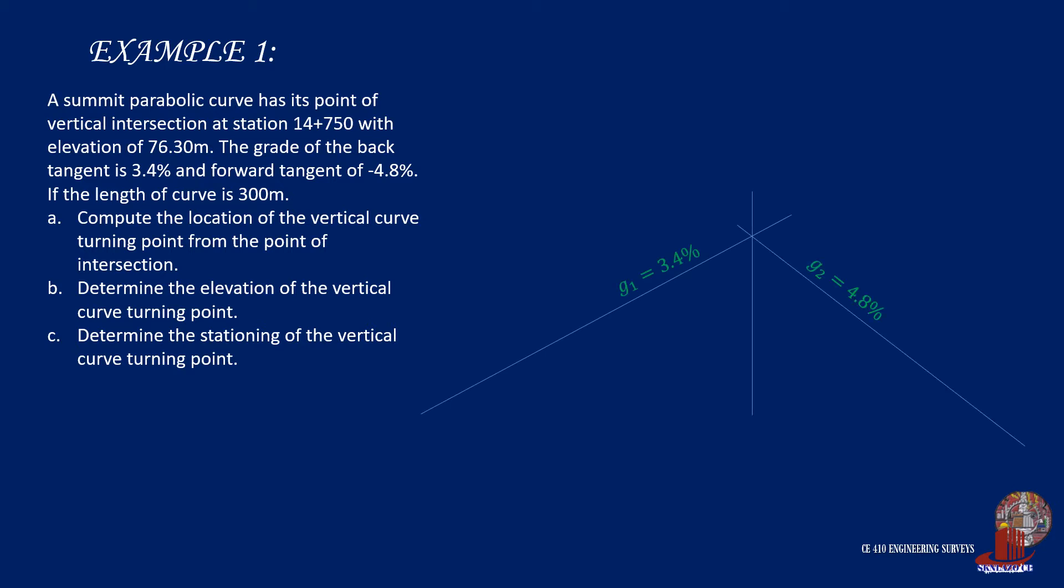Given our grades: g1 is positive 3.4% and g2 is negative 4.8%. The length of the curve is also given as 300 meters and the point of vertical intersection is at station 14+750 with elevation of 76.3 meters.